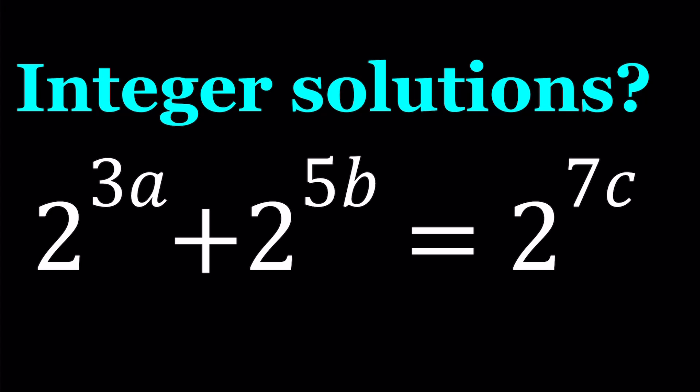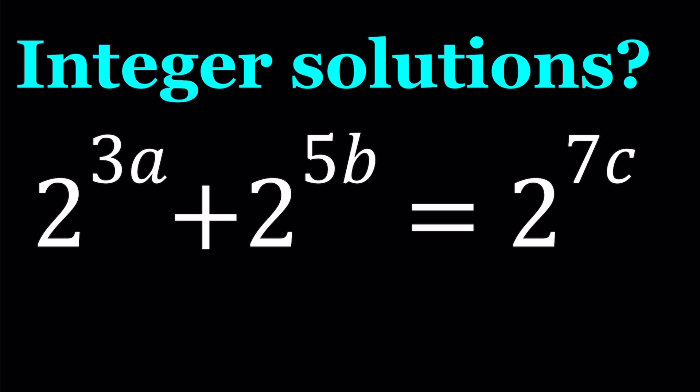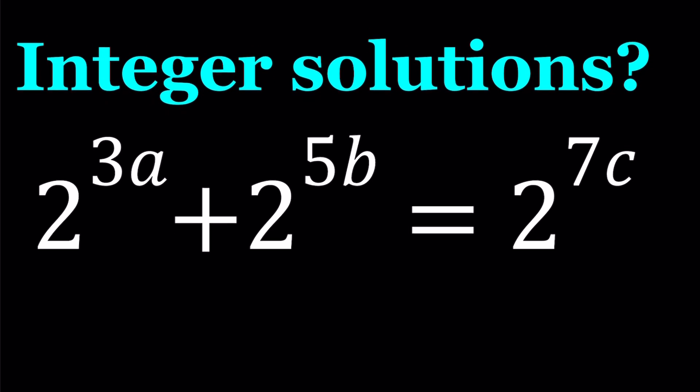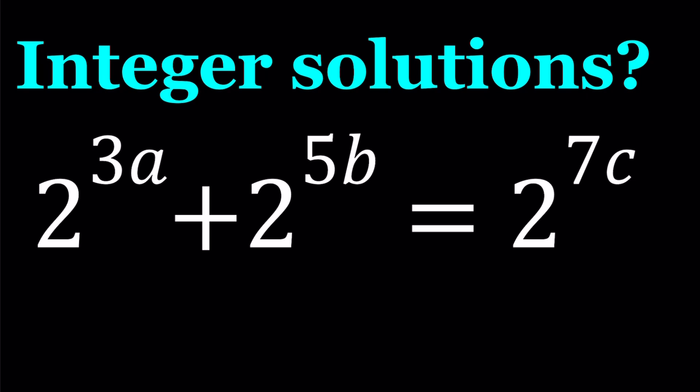So we have 2 to the power 3a plus 2 to the power 5b equals 2 to the power 7c. a, b, and c are all integers. And we're going to be using a lot of interesting tools, one of which is modular arithmetic.